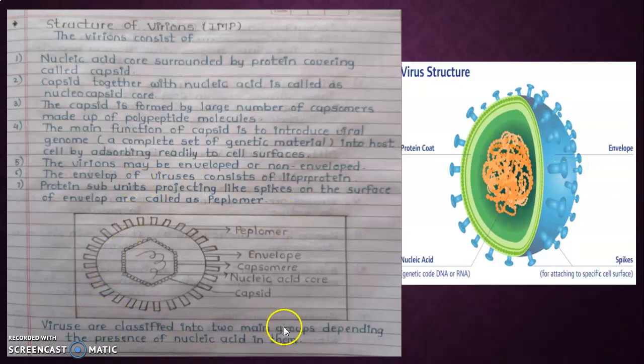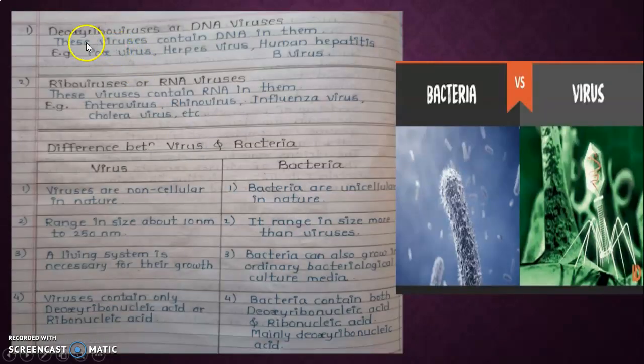Viruses are classified into two main groups depending on the presence of nucleic acid in them. First is DNA virus and second is RNA virus. DNA virus means this virus contains DNA in them: pox virus, herpes virus, human hepatitis B virus. RNA virus means these viruses contain RNA in them: enterovirus, reovirus, influenza virus.